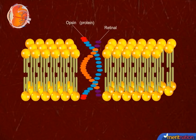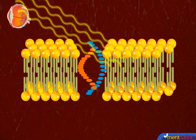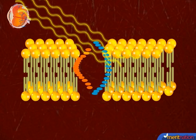Opsin is a protein and retinal is an aldehyde of vitamin A. In the presence of light, opsin and retinal get dissociated, resulting in a change in the structure of opsin. This leads to the dissociation of opsin from retinal.